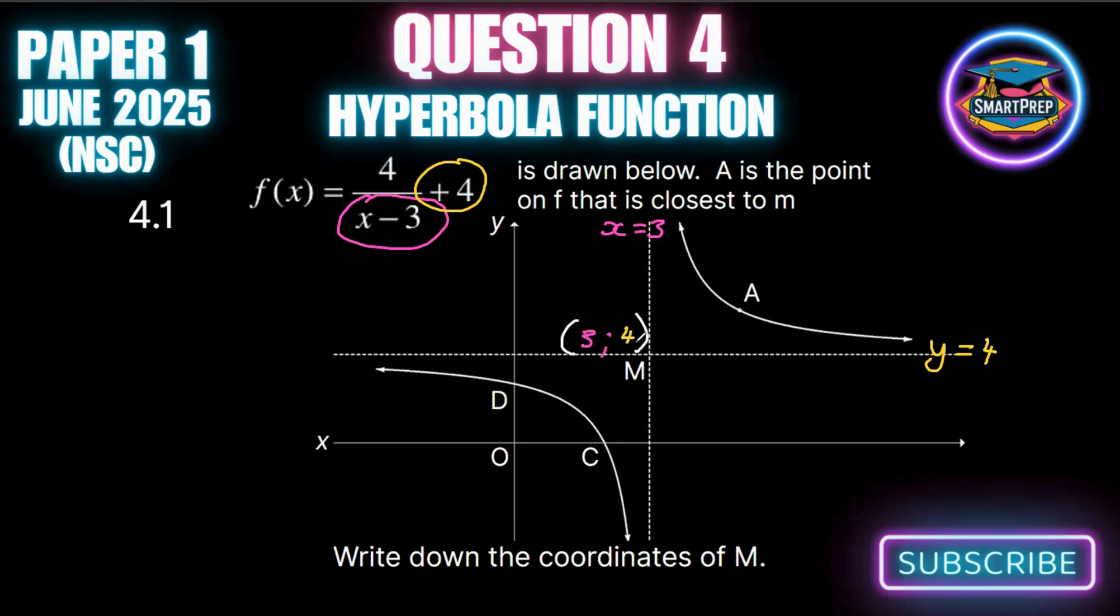Notice that the sign changes for x. If x is negative 3 in the equation, we know the asymptote is x equals 3, whereas 4 is intuitive—4 corresponds to y equals 4. But with the x we change the sign. So if it had been x plus 3, the asymptote would have been x equals negative 3.